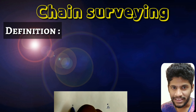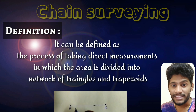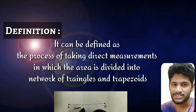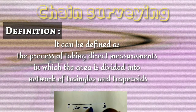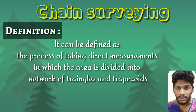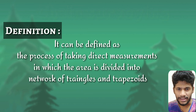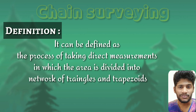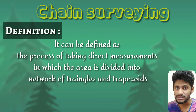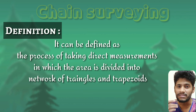When it comes to defining chain surveying, it is a process of taking linear measurements or horizontal measurements between two points. As already stated in the first principle of surveying — working from whole to part — you have to divide the given area into a network of triangles or trapezoidal areas, so that each individual triangle and trapezoidal area is found out and finally the areas are summed up to get the final values.